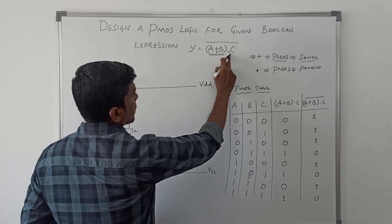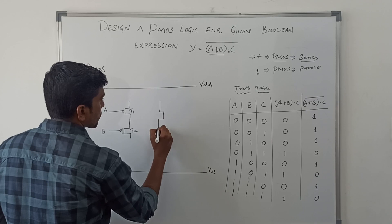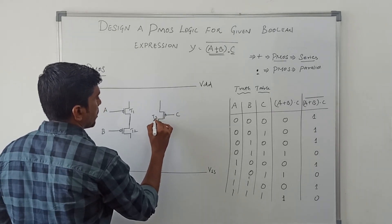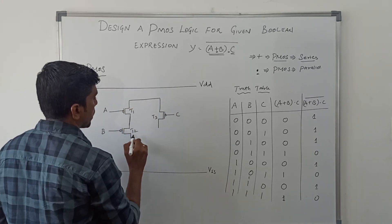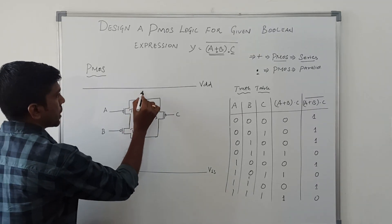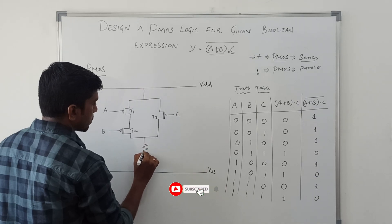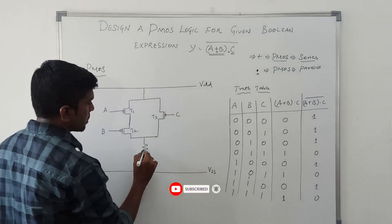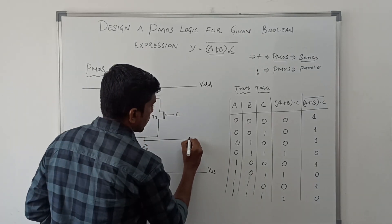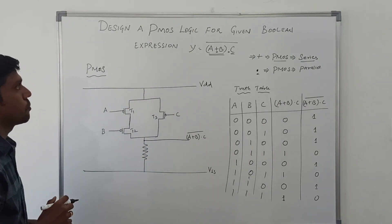These two transistors (T1 and T2 in series) connect in parallel with transistor T3. This is because in the boolean expression we have the dot operator, and the dot operator means the two transistor networks connect in parallel. This whole network is connected to VDD. There is also a pull-down resistor, and you get the output between the pull-down resistor and this pull-up network, giving A plus B dot C, whole complement — (A + B·C)'. This is the complete structure for the given boolean expression.